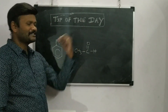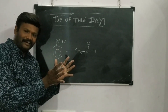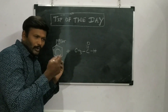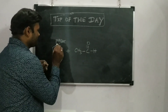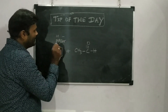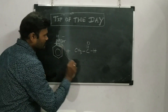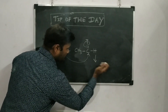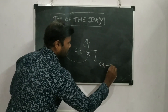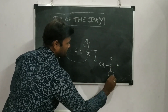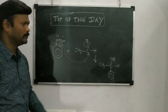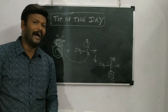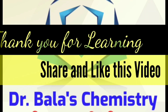Tip of the day: whenever a Grignard reagent reacts with aldehydes or ketones, just by doing this trick you can write the product directly. The Grignard reagent has two players — the carbanion carries a minus charge, so this bond breaks, the negative charge goes and attacks the carbonyl carbon. The product is CH3C with O minus, H, and the benzene ring attached — just add H+ and you get the final product. That's the tip of the day — I hope it will be very useful to you. Thank you for learning — share and like this video.